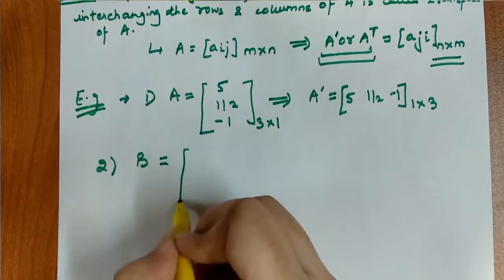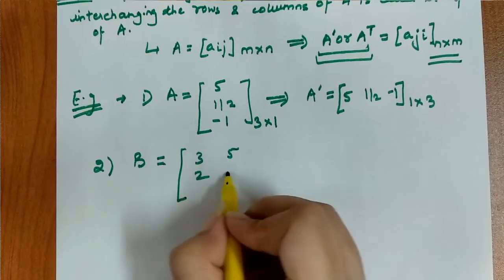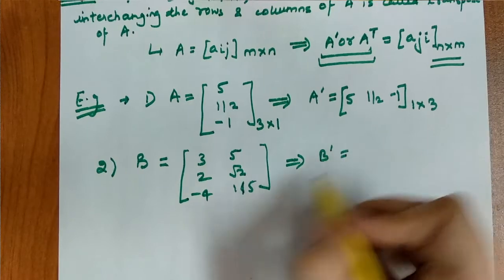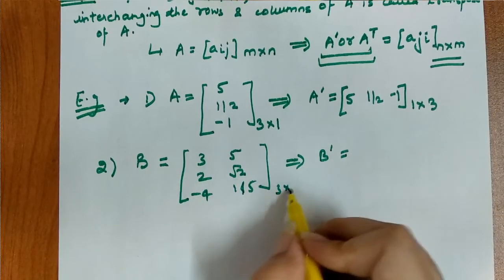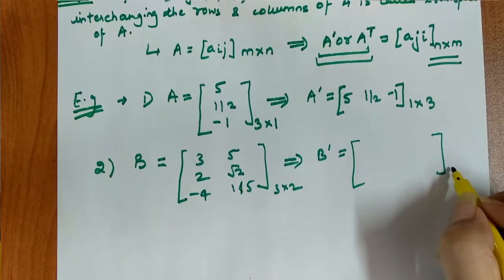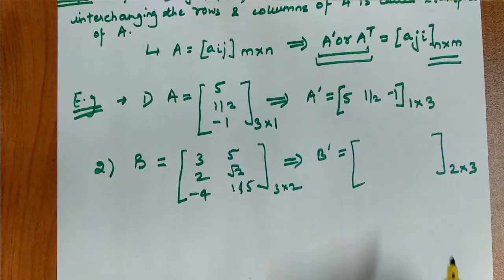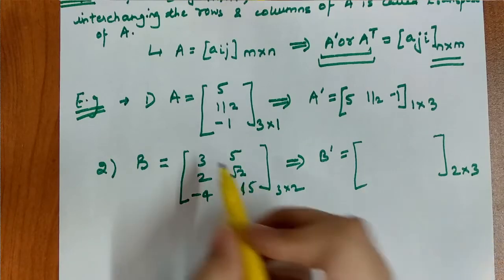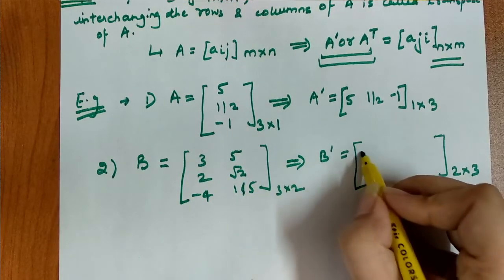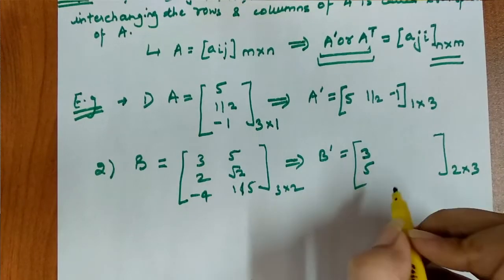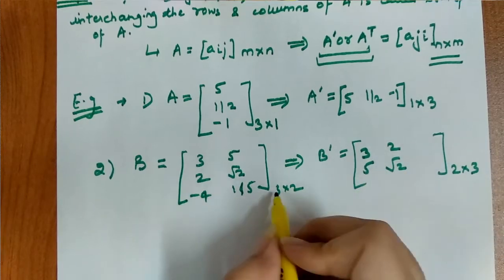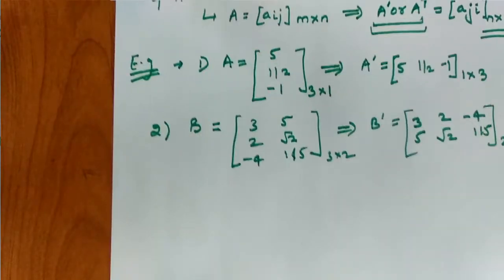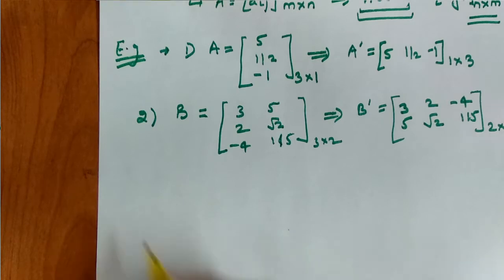For the second example, let's consider matrix B with elements 3, 5, 2, root 2, -4, and 1/5. This matrix has order 3 cross 2 — 3 rows and 2 columns. So the resultant transpose matrix will have order 2 cross 3 — 2 rows and 3 columns. We interchange rows into columns: the first row becomes the first column and second row becomes the second column, giving us the transpose of matrix B with elements [3, 2, -4; 5, root 2, 1/5].